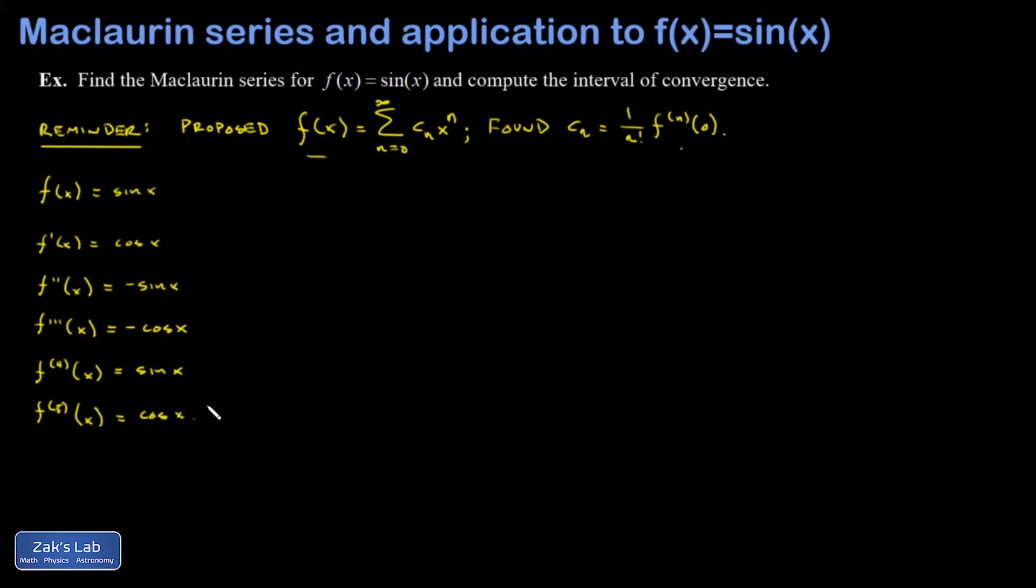One more for good measure. All right, I can see from my formula for the coefficient cn that I need to evaluate the original function and all these derivatives at x equals 0. And that's quick enough to do. So if I evaluate the sine function at 0, I get 0. If I evaluate the cosine function at 0, I get 1. So I'm just going to plug all those in real quick.